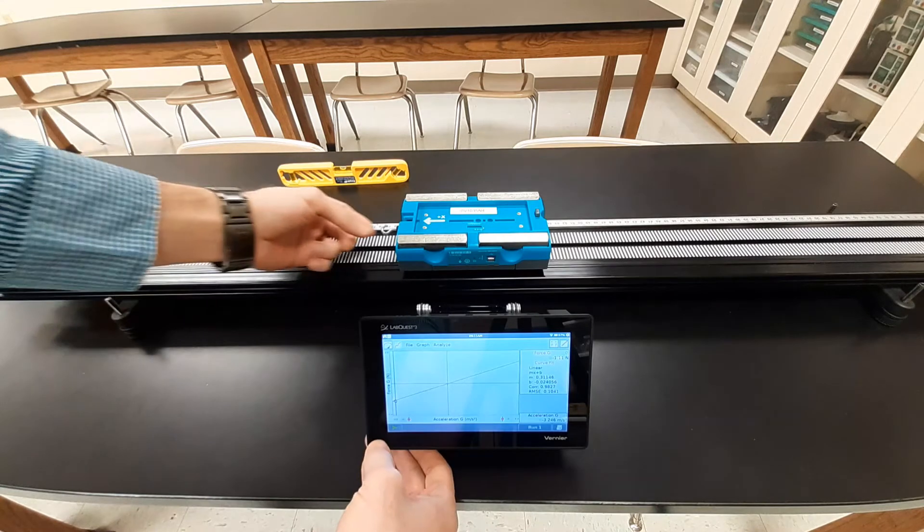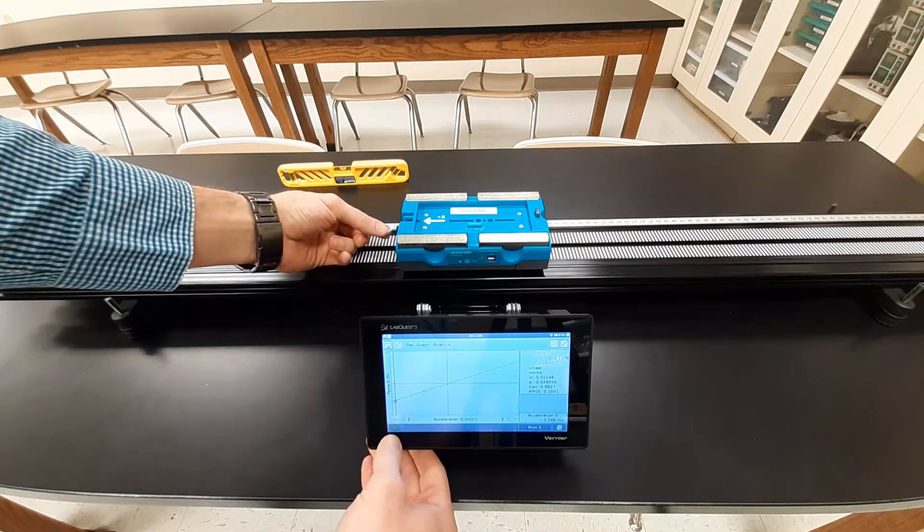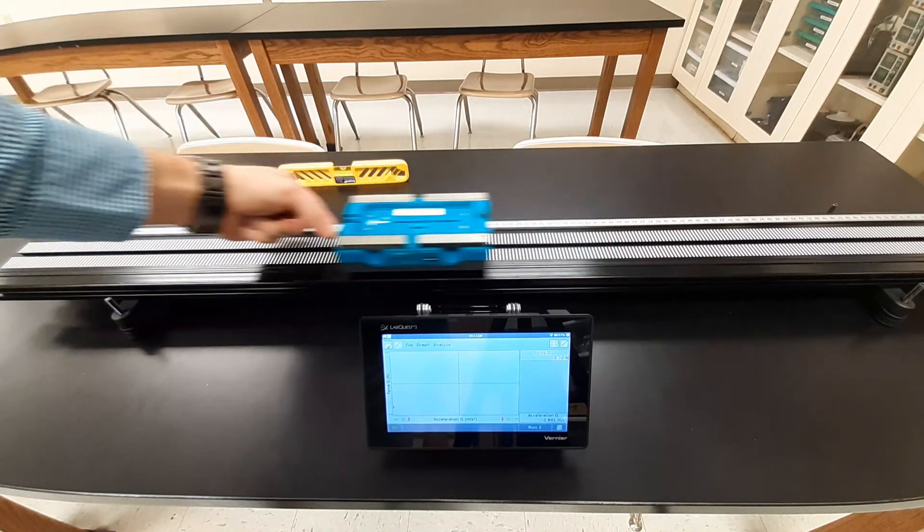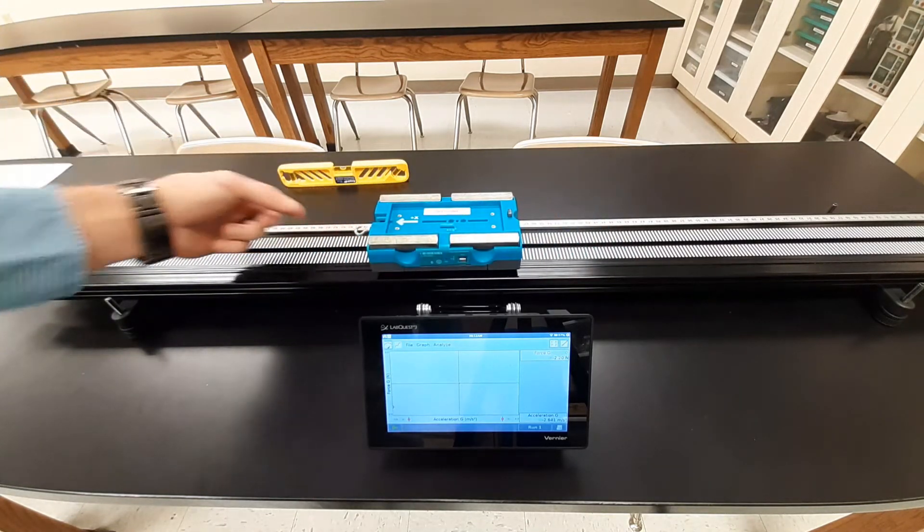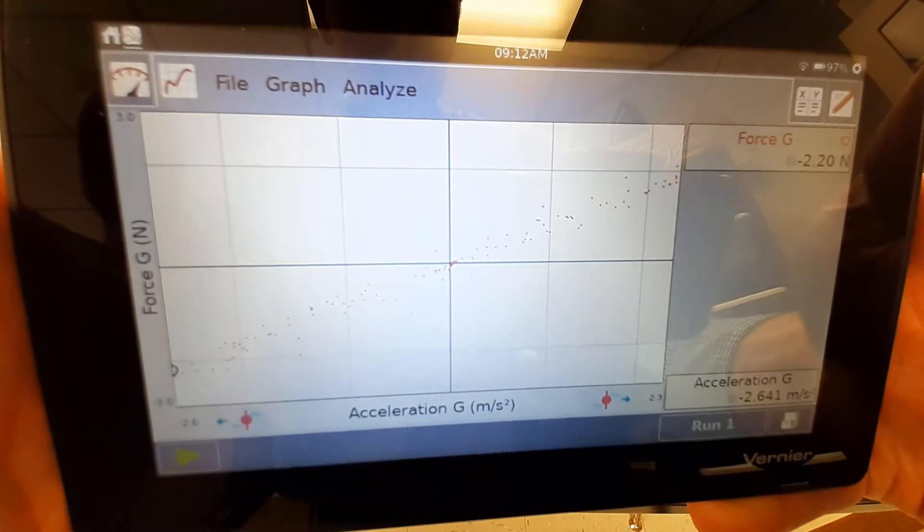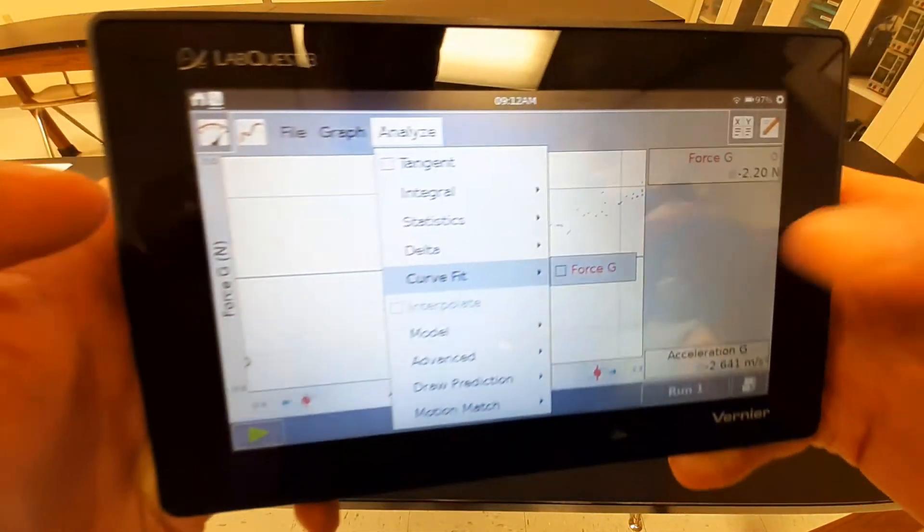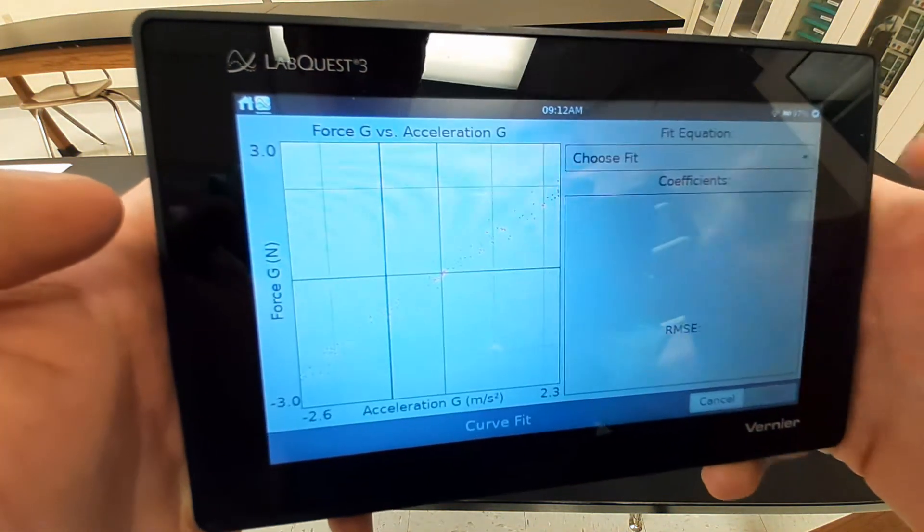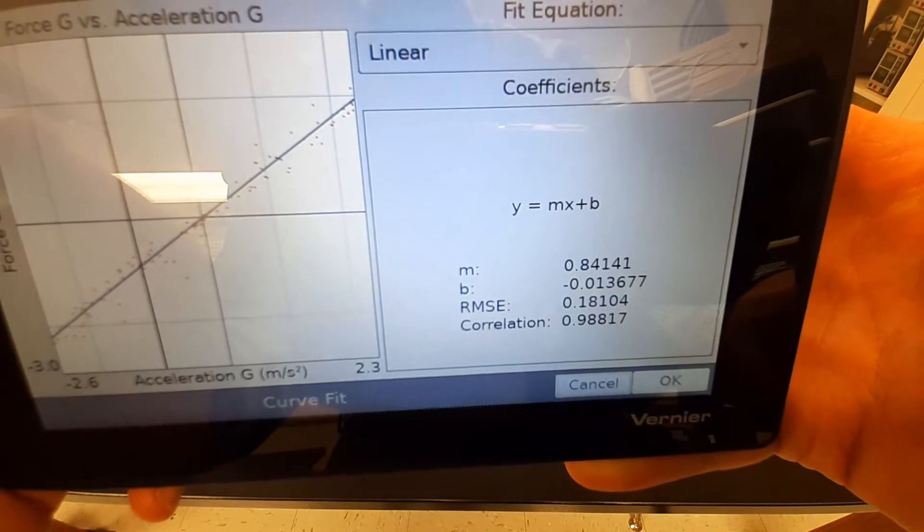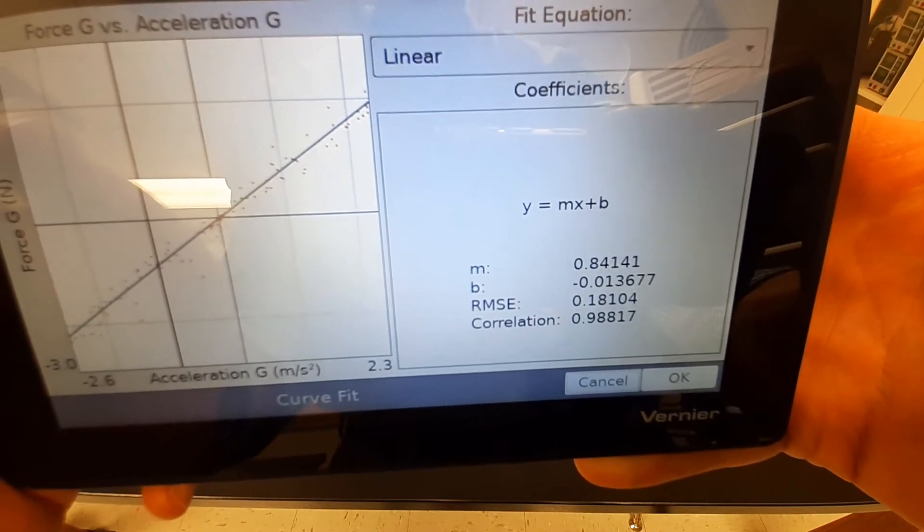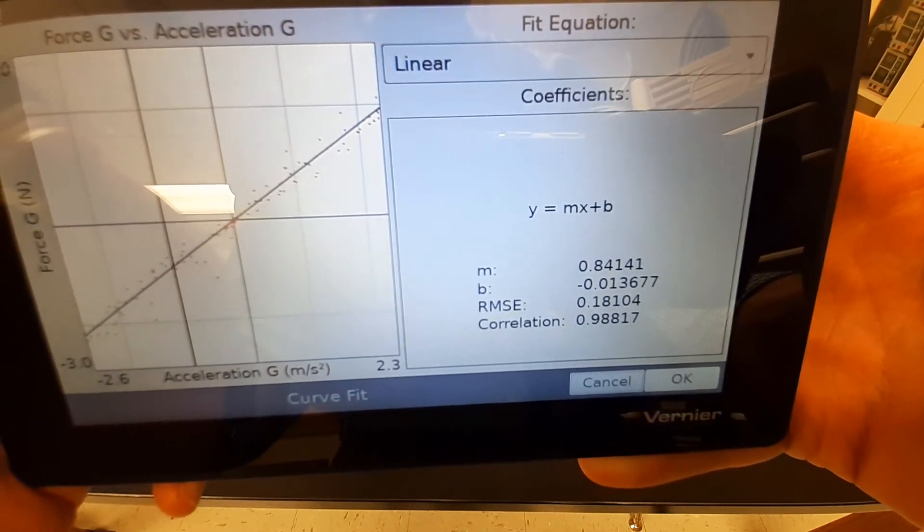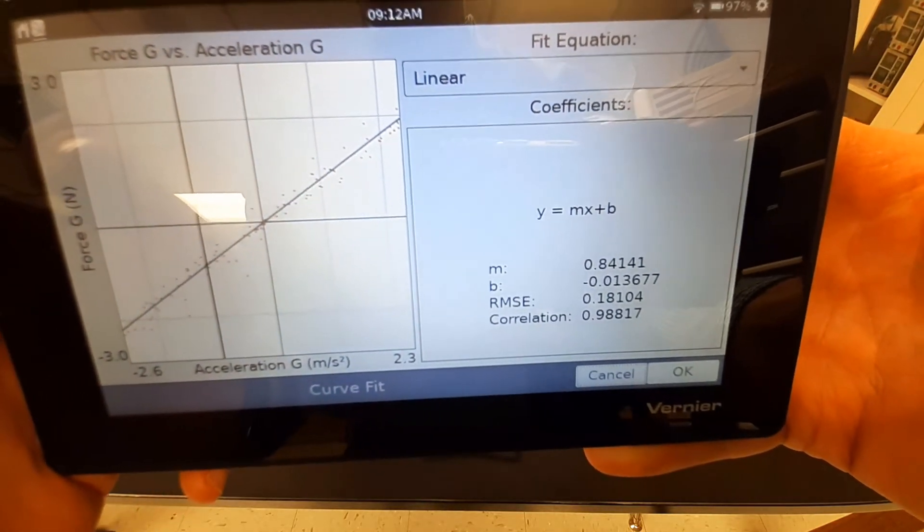Part two, trial number one, same as part one. I'm going to start my data collection. I'm going to give this cart some pushes and pulls, changing its direction, changing how hard I'm pulling at times. And we want to now analyze this data again. So just like we did, analyze curve fit, we're looking at the force. And so now part two, trial one, I have a slope of 0.841 and a y-intercept of negative 0.017. That's trial one, part number two.